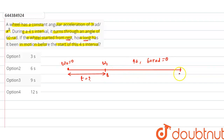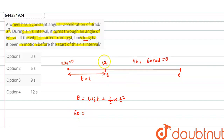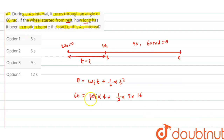We apply the equation: θ = ω_initial × t + ½ × α × t². In this relation, θ is 60 radian, t is 4 seconds, and α is 3 radian per second squared. So: 60 = ω_initial × 4 + ½ × 3 × 16, which gives 60 = 4·ω_initial + 24.